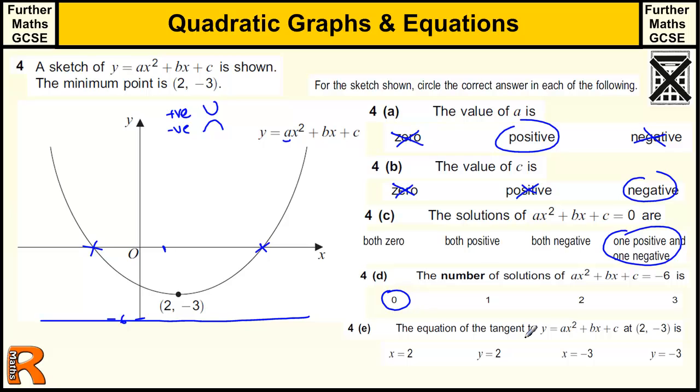The equation of the tangent to this at (2, -3), so the tangent is the line that just touches that, carries along. It's a horizontal line that goes through minus 3 on the y-axis, so y equals minus 3. Okay, one mark for each of those, I think.